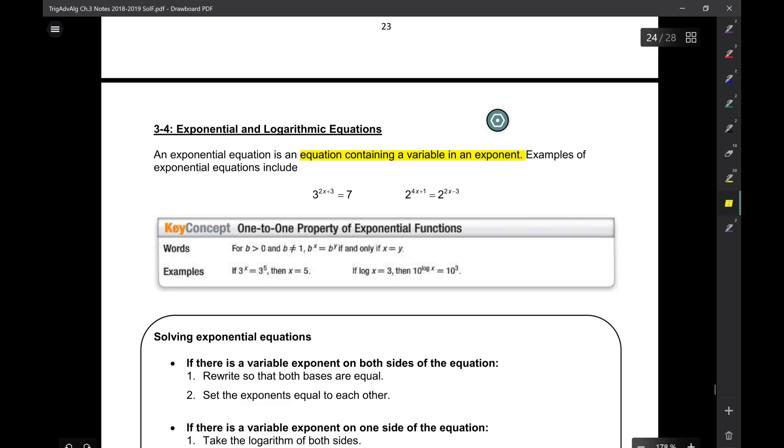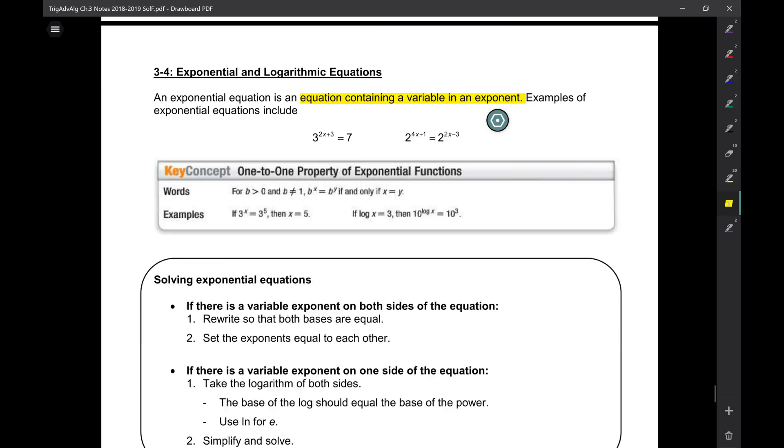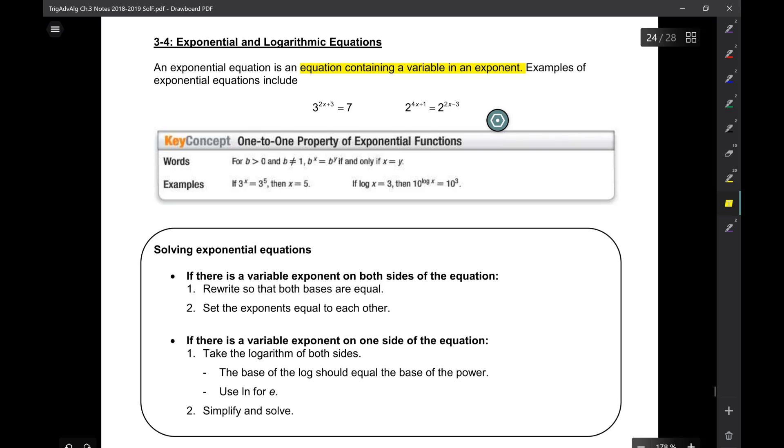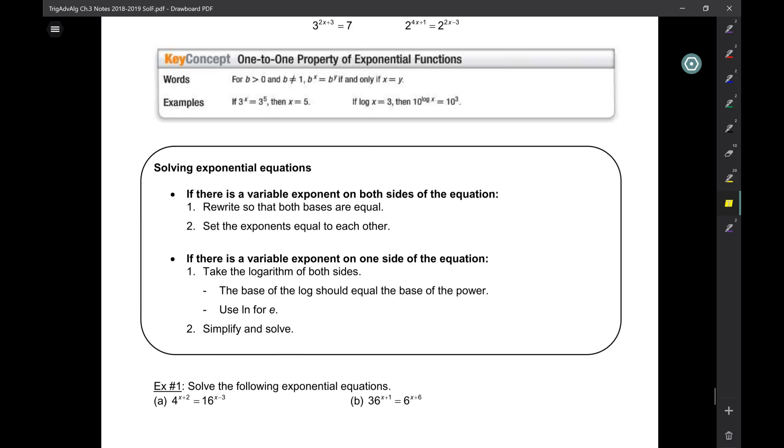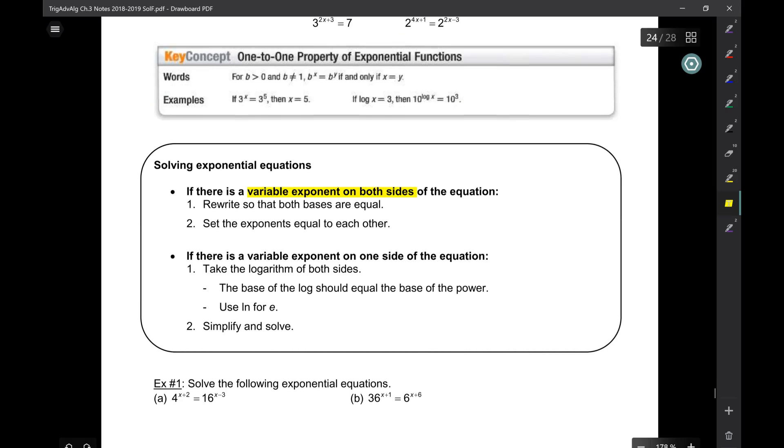So first, when you see your exponential equation, you have to figure out which of the two types it is, and then go about solving it accordingly, because each have their own type of solution. So here's how we solve exponential equations. We're going to do the type which has a variable on both sides. If there is a variable exponent on both sides of the equation,